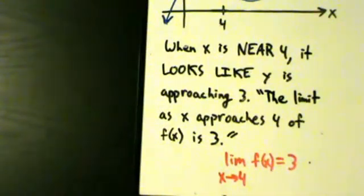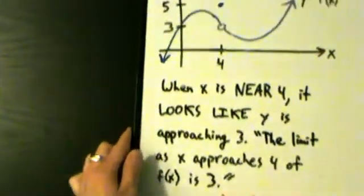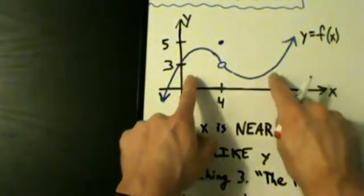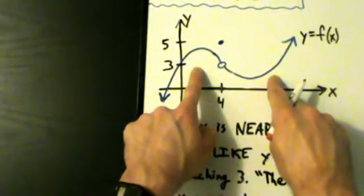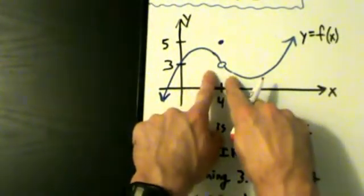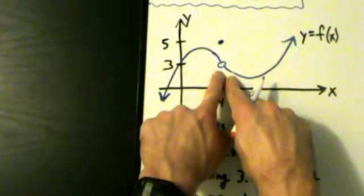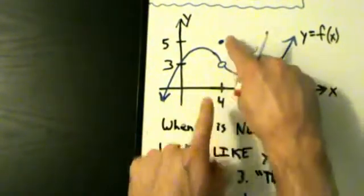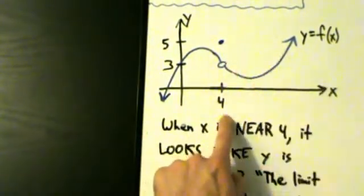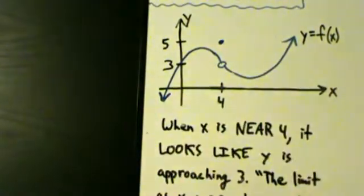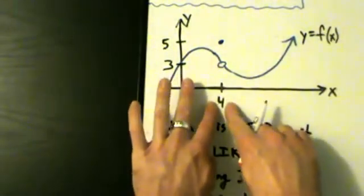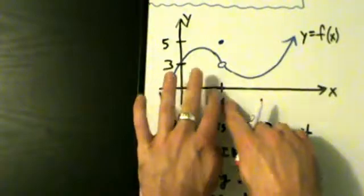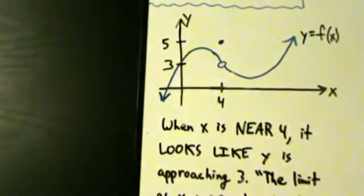Let's take a look at the graph one more time. We see that if we follow along the curve from either the left or the right, as x gets closer and closer to 4, y is getting closer and closer to 3. And again, y actually hits 5 when x is 4, but that doesn't matter for the limit — the only important thing is what happens around or near the value, not at the value. Now let's take a look at another example.